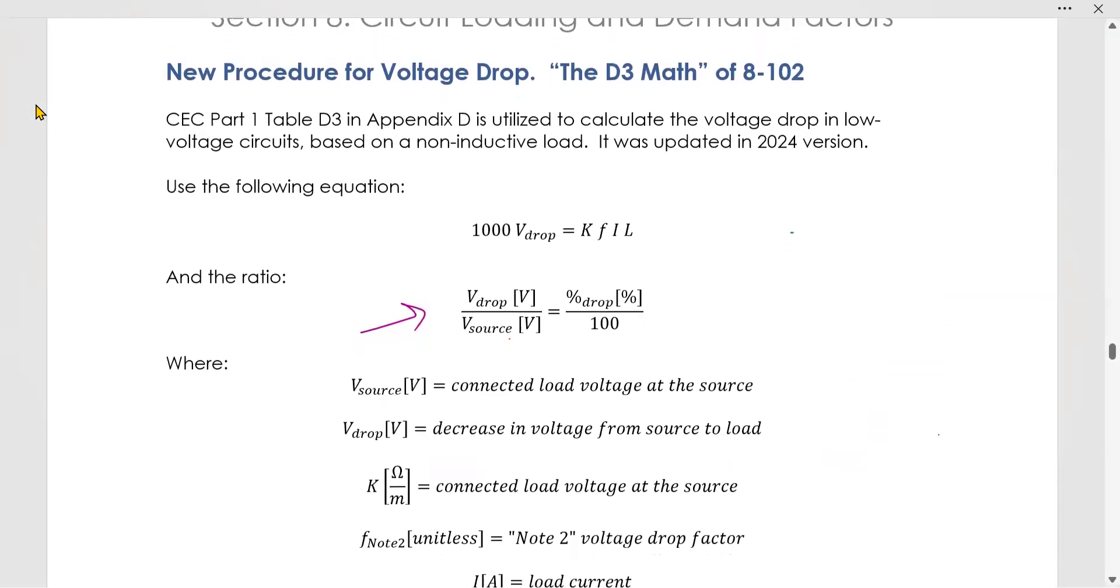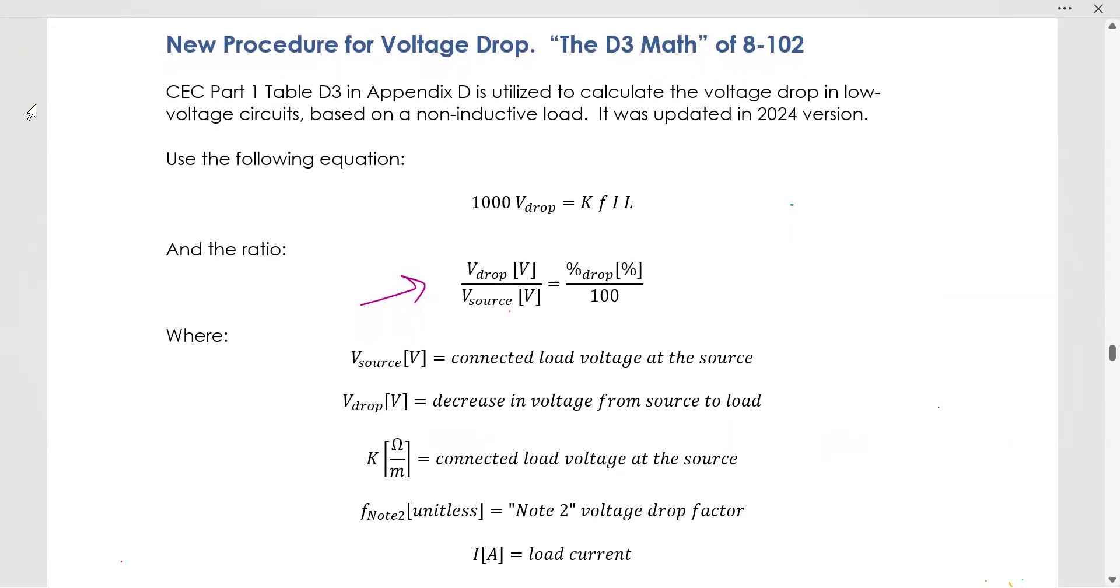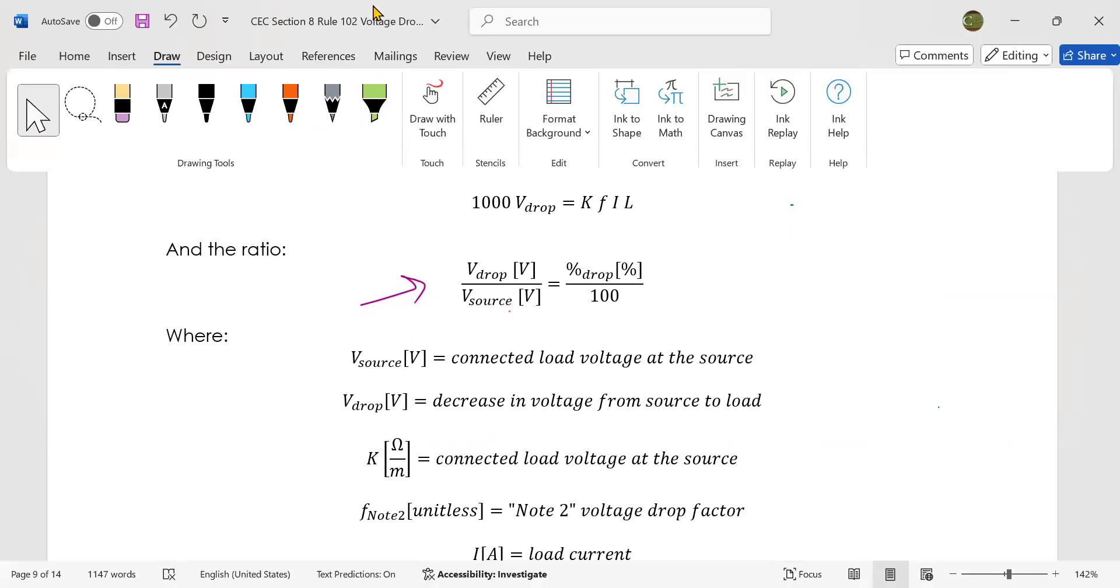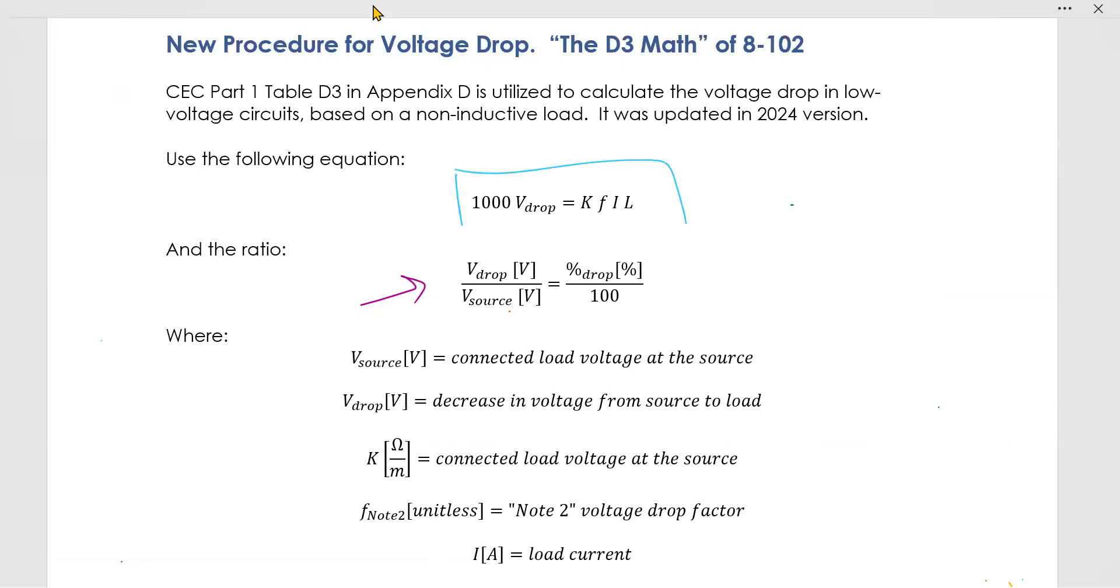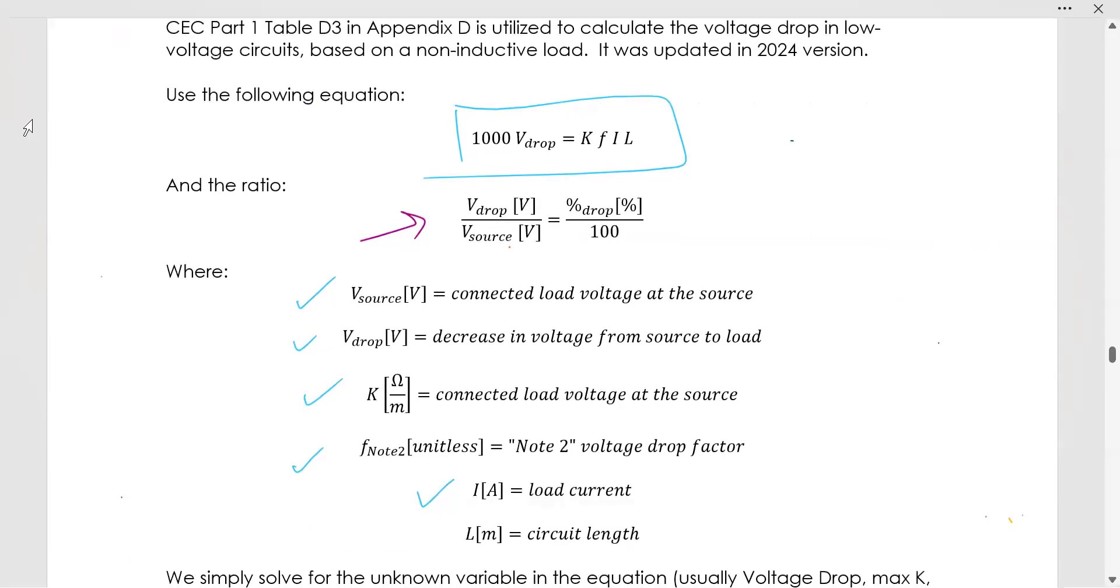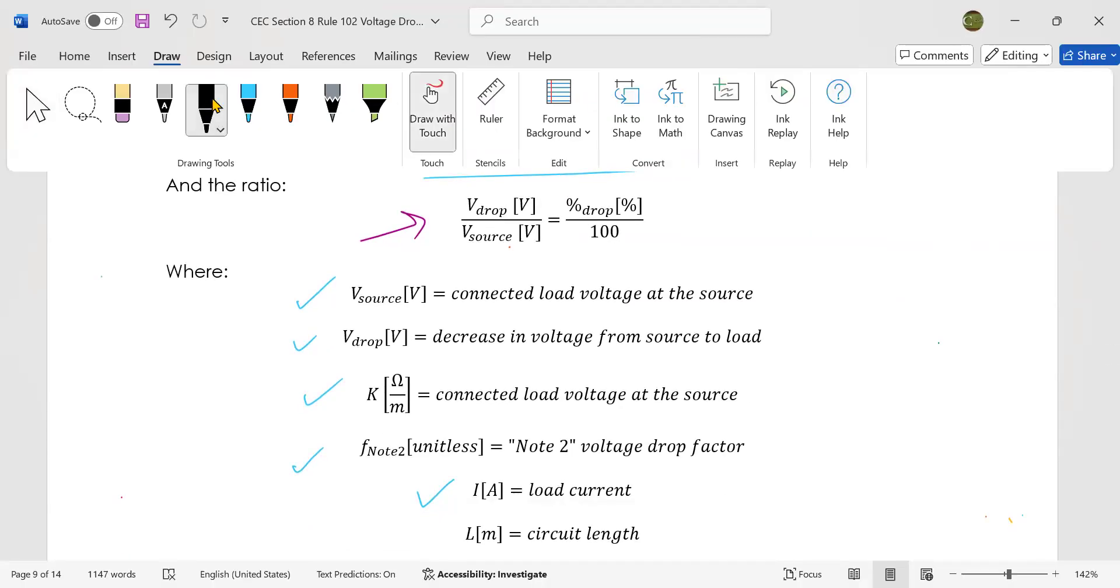What I have said so far is the new procedure for doing the voltage drop calculations in the 2024 electrical code simply means that you have a formula and you have to sub in the voltage source, the voltage drop, K value, and a factor that is called a factor from note 2, and then the load current and the length. You solve for whichever variable you don't know.